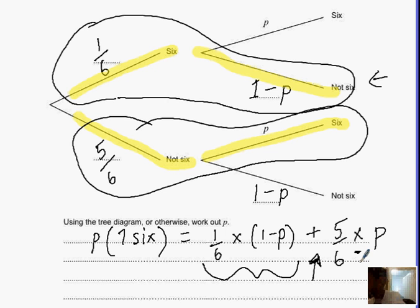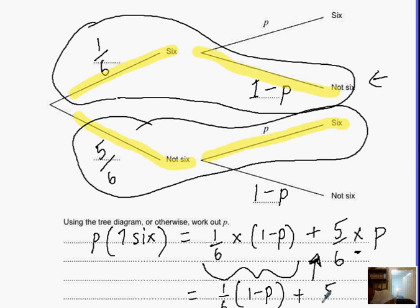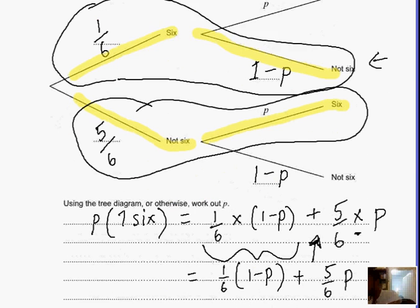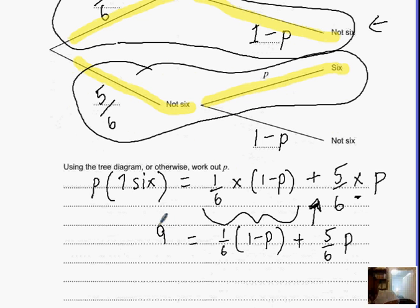Once you've got your equation sorted, you can write it neatly as one-sixth times (one minus P) plus five-sixths times P. Going back to the question, it says the probability of getting exactly one six is seven out of nine, so I can make that equal to seven out of nine.